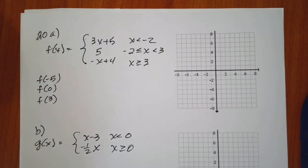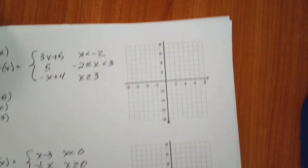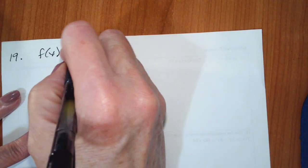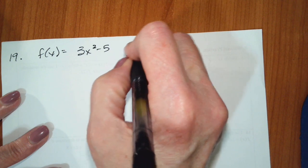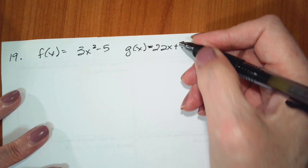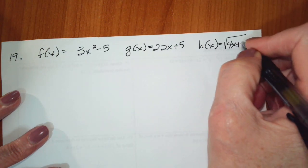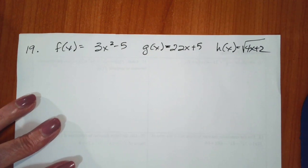Let's continue on here. We're going to start with number 20 — actually, we did not do 19, so we're going to have to do 19 first. So number 19: f of x equals 3x squared minus 5, g of x equals 22x plus 5, and h of x equals the square root of 4x plus 2. This is going to be all of the function operations.